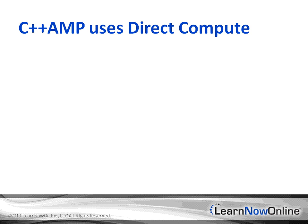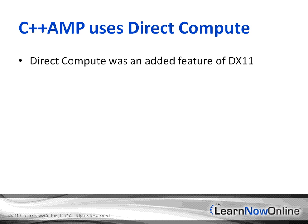We're going to talk about the support in Windows for C++ AMP in particular. Much of the support for C++ AMP you can deduce from Windows support for DirectCompute, because C++ AMP is mostly a C++ template library built on top of the DirectCompute API. DirectCompute was an added feature of DirectX 11 and was eventually backported to DX10 as well, but any version of Windows that supports DX11 or later will be able to support C++ AMP.